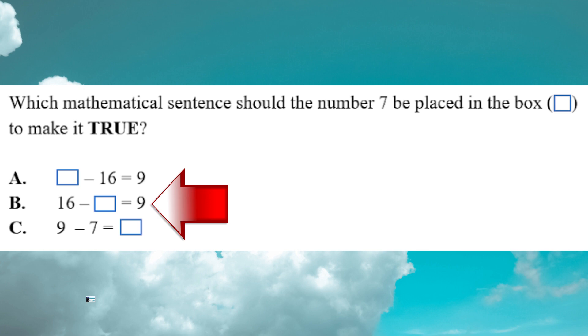Which mathematical sentence should the number seven be placed in the box to make it true? So option A, if you put seven in the box, it would be seven take away 16 equal nine. That cannot be true because if you take away the larger number, 16 from seven, you would end up with a negative number. And students haven't learned that part of the curriculum as yet. For option seven, that can't be true either because nine take away seven equal two. So if you put it in the box, nine take away seven equals seven. You know, that is not true. So option B would have to be the answer. 16 take away seven equal nine. And that is how you can reason it out with the child to ensure that they are understanding how to do subtraction.